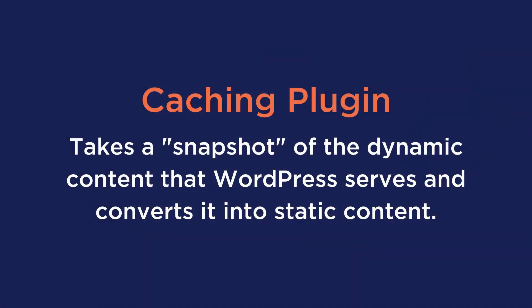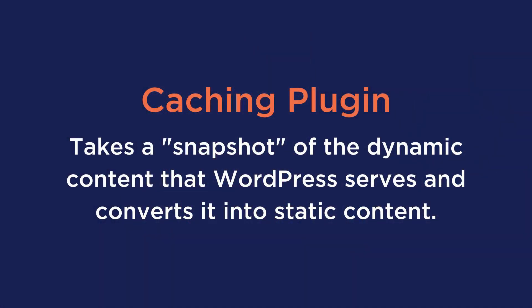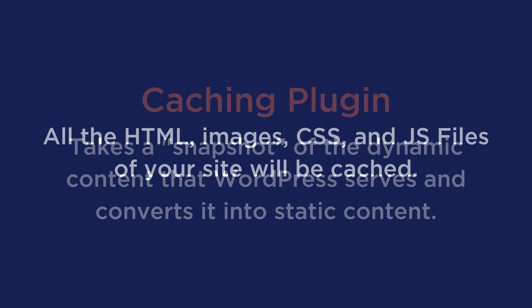If you're unaware of what a caching plugin is, a caching plugin takes what we would call a snapshot of the dynamic content that WordPress serves and converts it into static content. This way, all the HTML, images, CSS, and JS files on your site will be cached. So when a visitor wants to see that cached content, your WordPress site won't need to contact the web server to show the page. Instead, it will simply send that snapshot to the visitor's browser in the form of an HTML file, making the process of your website loading a lot faster.